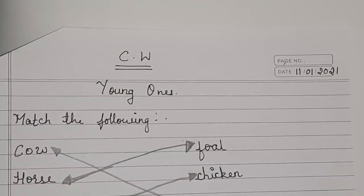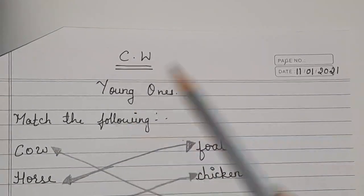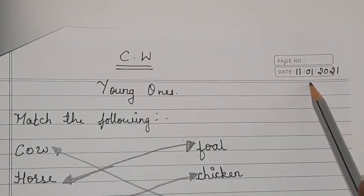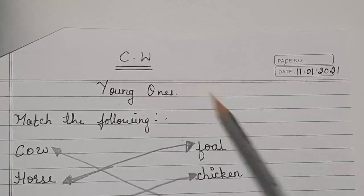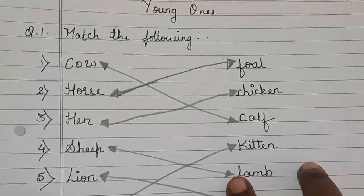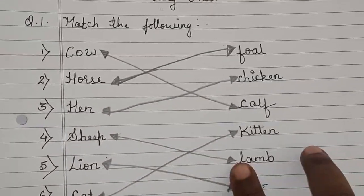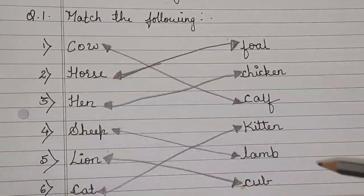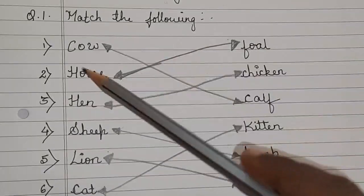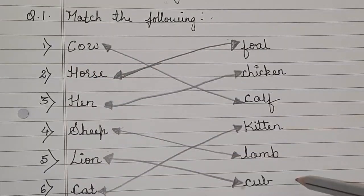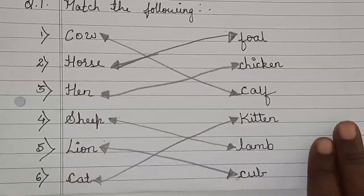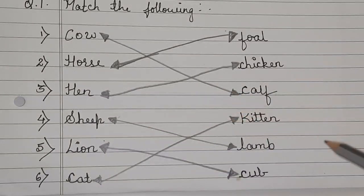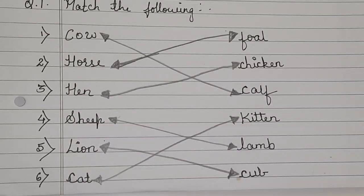So children, today's classwork is match the following. First you have to write the date, then the heading: Young Ones. The classwork is to match the animals with their young ones. You have to write it in the notebook. This is your classwork. Okay children, bye.